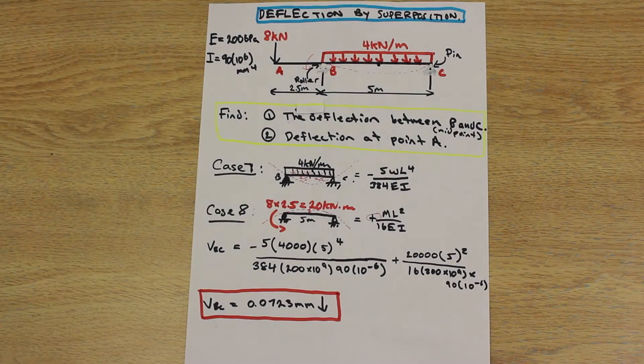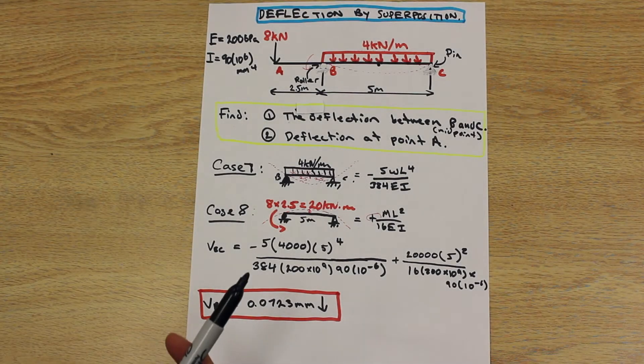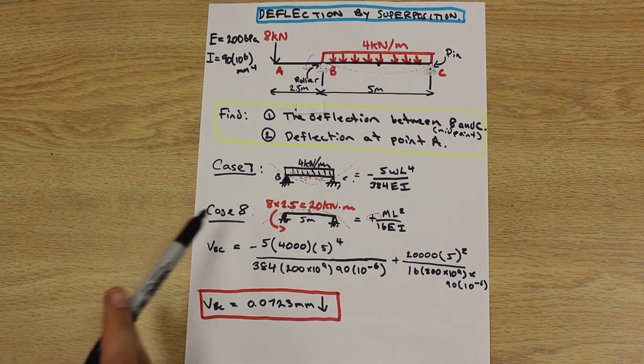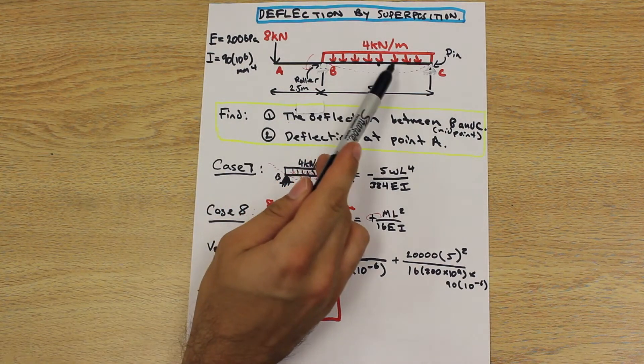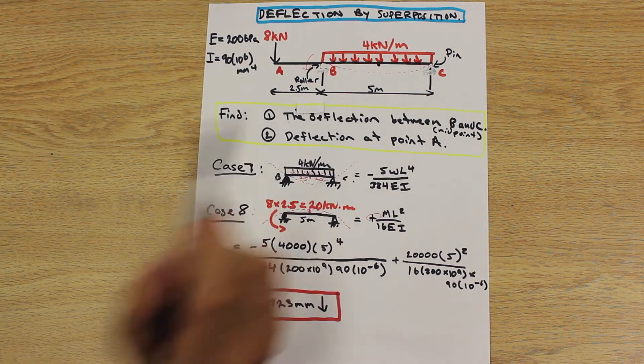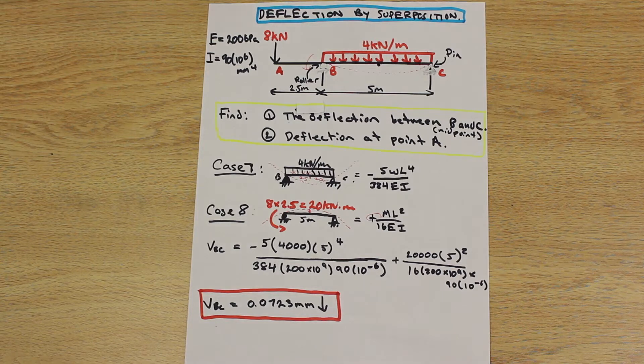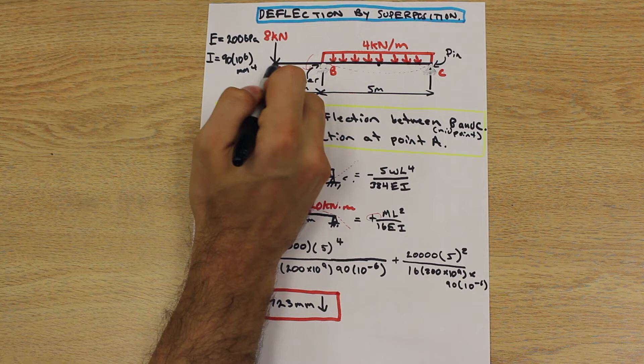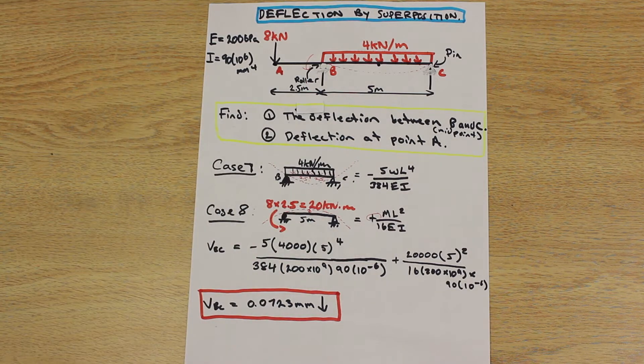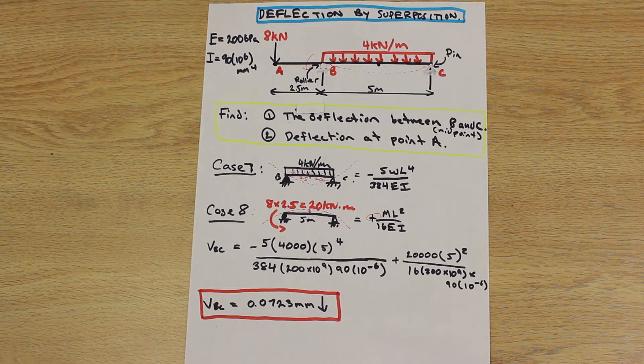Hi guys, we're back. Fred here, AF Math and Engineering. In the first part of this video, we solved for the deflection between the supports B and C at the midpoint. In the last part of this video, we are going to solve for the deflection at point A, which is over here. I hope that first video helped you out with your understanding of this topic, and we hope to further that in this video. Let's get started.